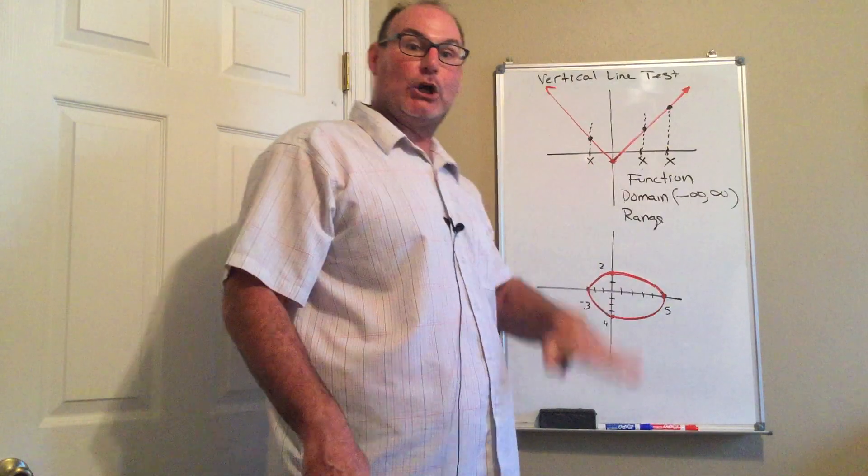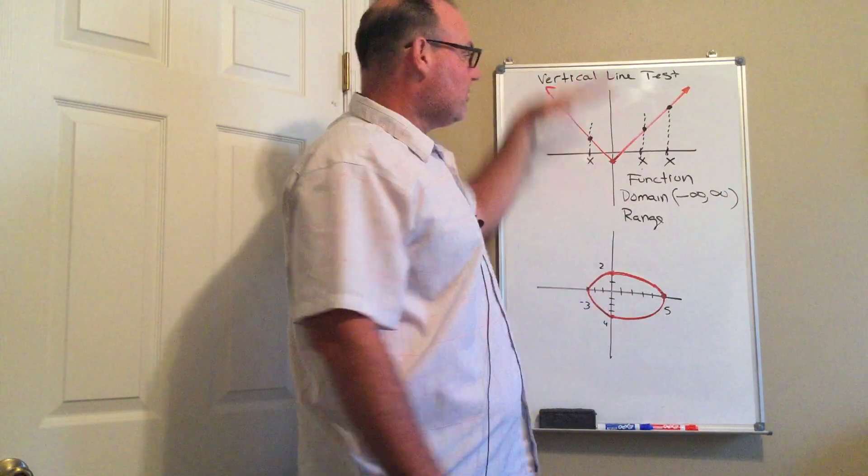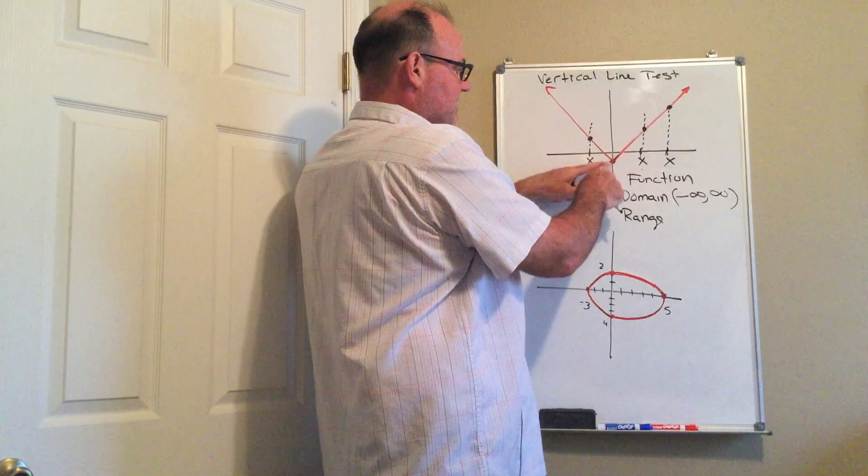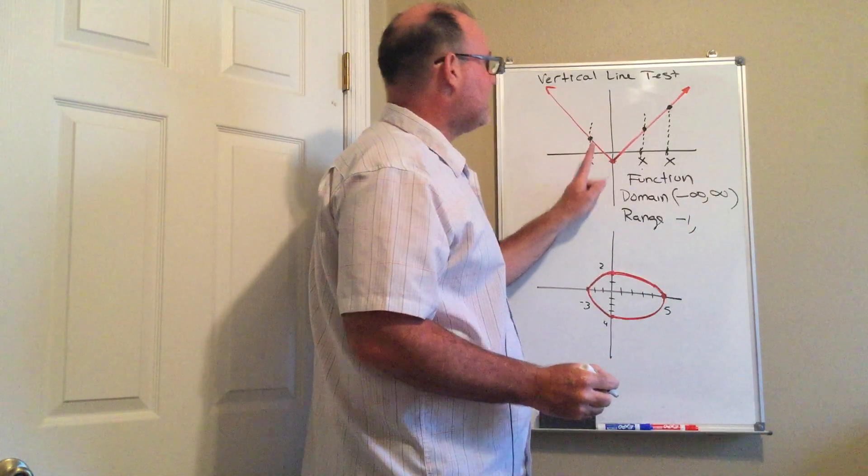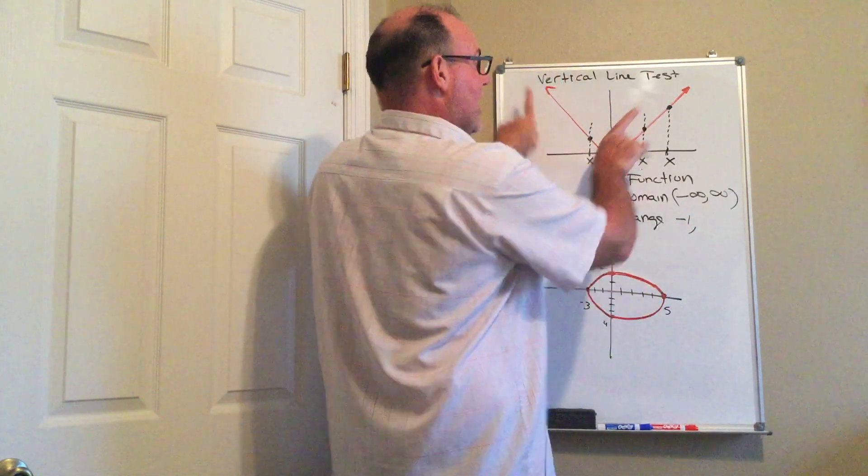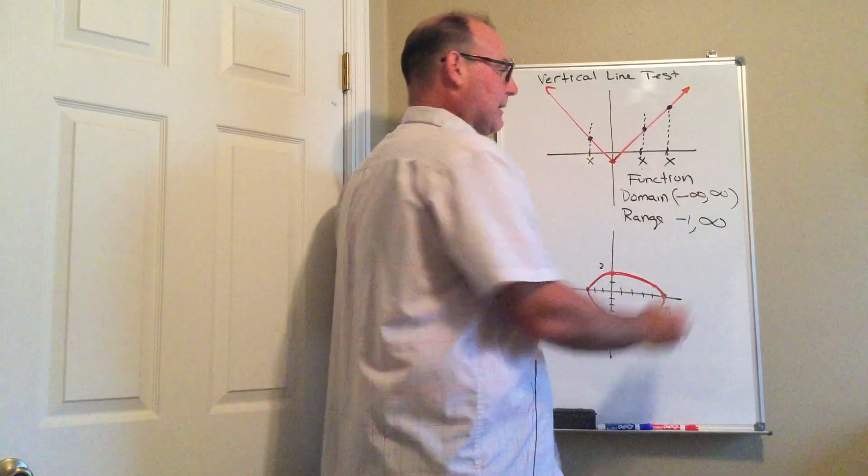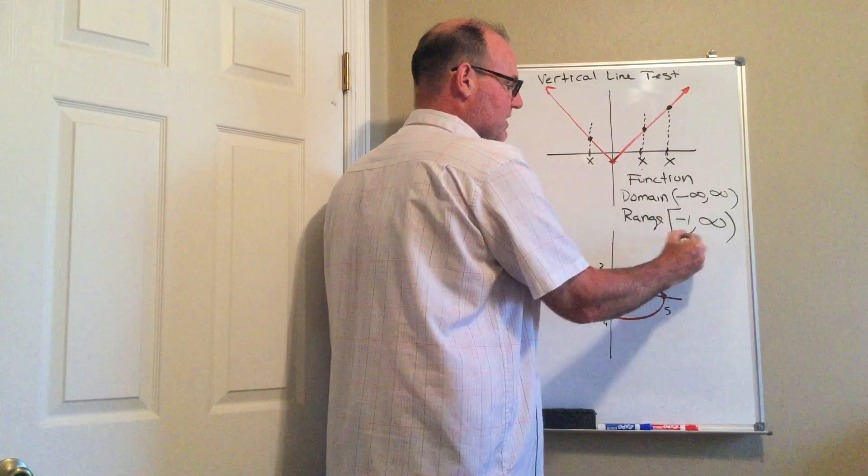Now my range, my y values, I look up and down. So what's the furthest down this graph goes? The lowest y value. Well as I trace my finger down I notice the lowest y value is here at negative one. And then the largest y value, again the arrows mean this is going to keep going up, so the largest y value is infinity. Now there's a point here at negative one, so I'm going to use a bracket.